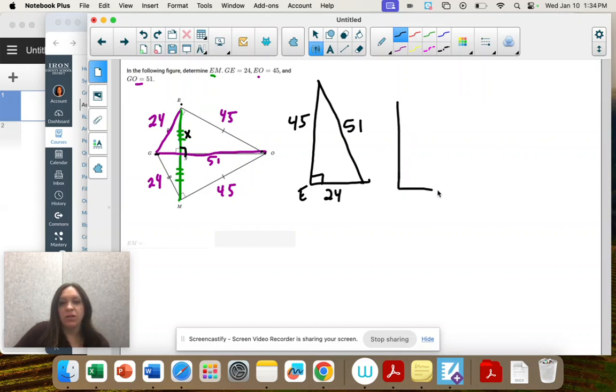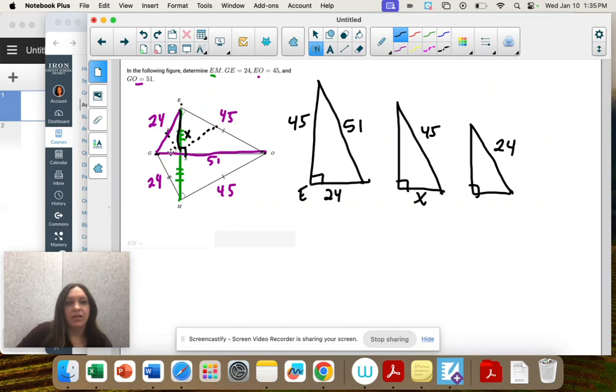Now we're going to do the medium one and the small one. So here's our medium one. The hypotenuse is 45. Short leg is x. And then our long leg, we don't know because we only know the whole length is 51. So I'm just going to leave that blank. And then here, let's do the small triangle where the hypotenuse is 24. And then the short leg, we don't know, part of 51. And the long leg is x.